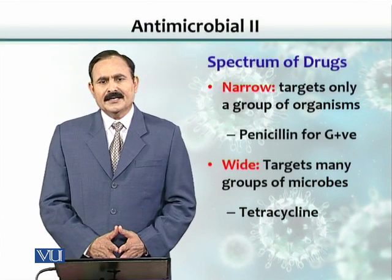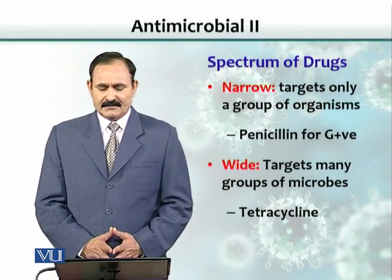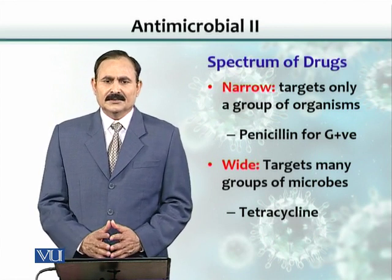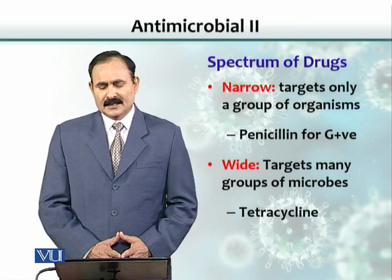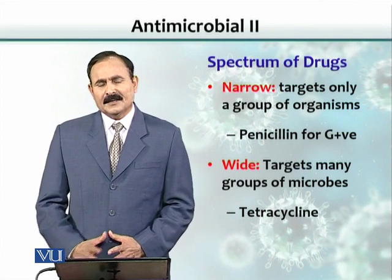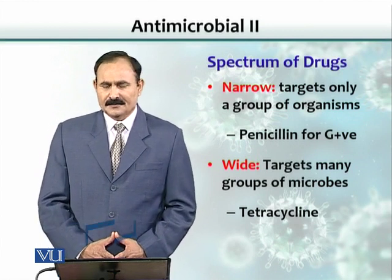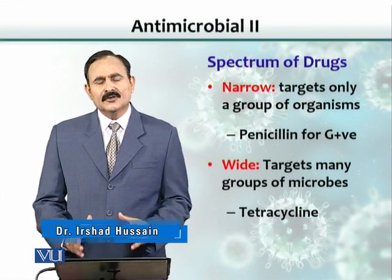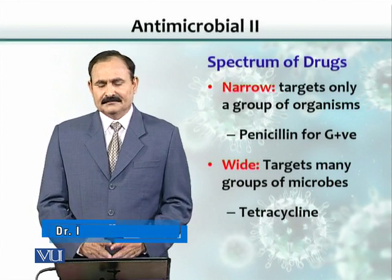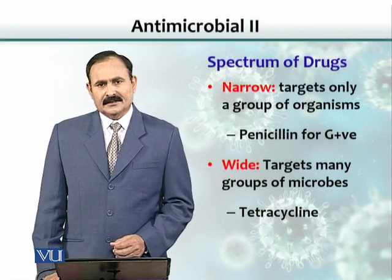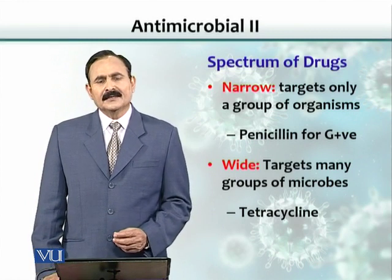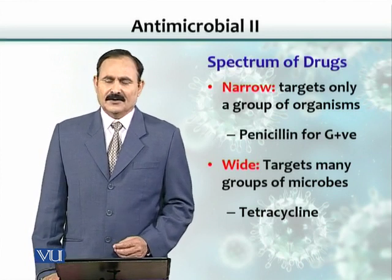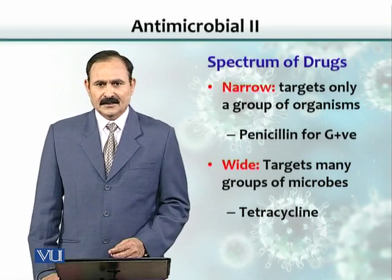Antimicrobials have a different spectrum of activity. Some are narrow spectrum, meaning they only target certain groups or one group of microbes. The other side of the spectrum is wide or broad spectrum antimicrobials. For example, tetracycline is a broad spectrum antibiotic, while penicillin is a narrow spectrum antibiotic because it targets only gram-positive organisms, sparing gram-negative microorganisms.